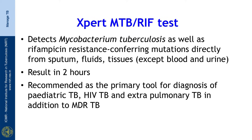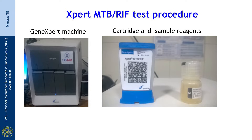The test has been recommended as the primary tool for diagnosis of pediatric TB, HIV-TB, and extra-pulmonary TB, in addition to multi-drug resistant tuberculosis. The Expert MTB-RIF test procedure involves the GeneXpert machine, a cartridge, and the sample reagents.